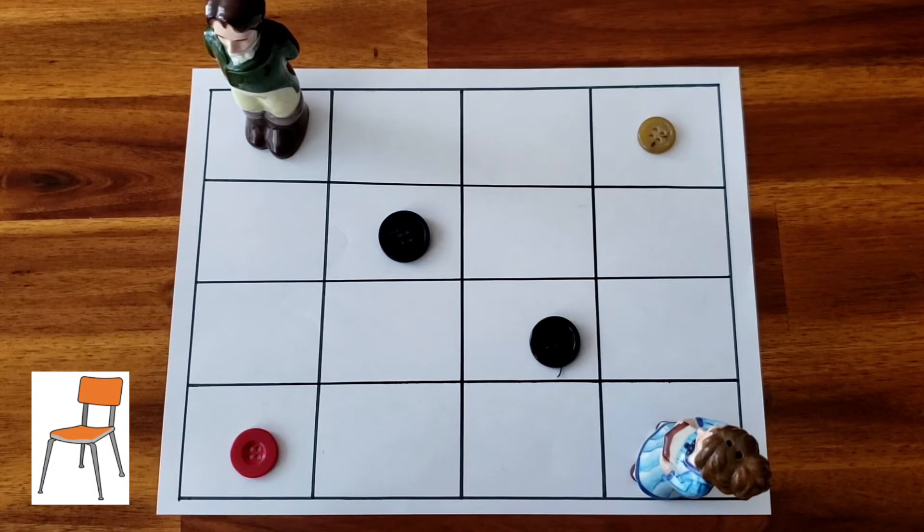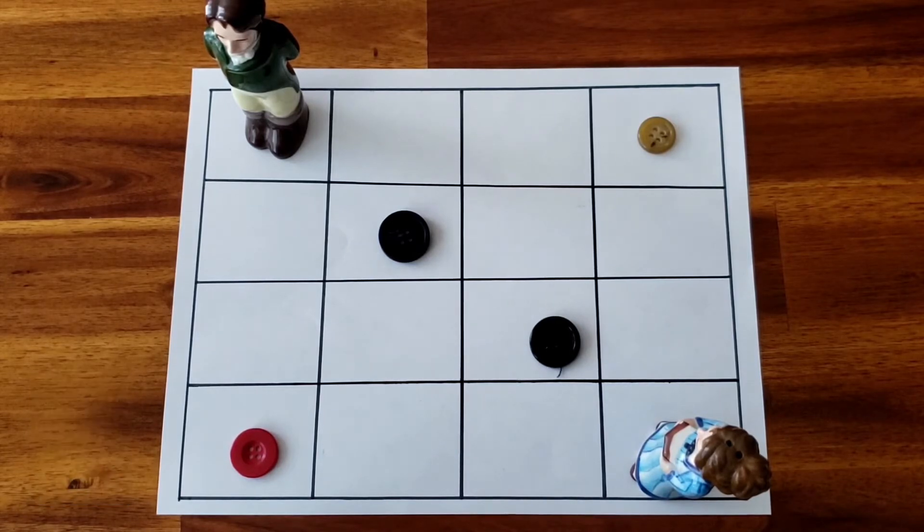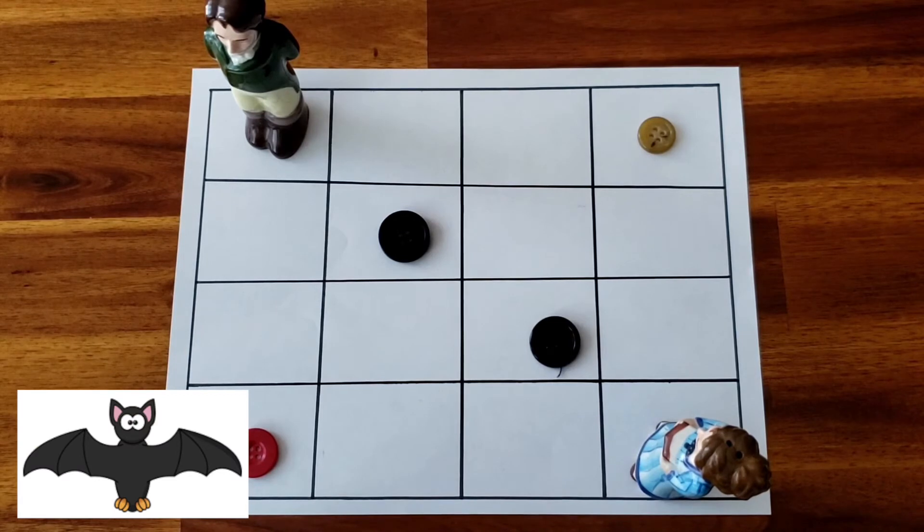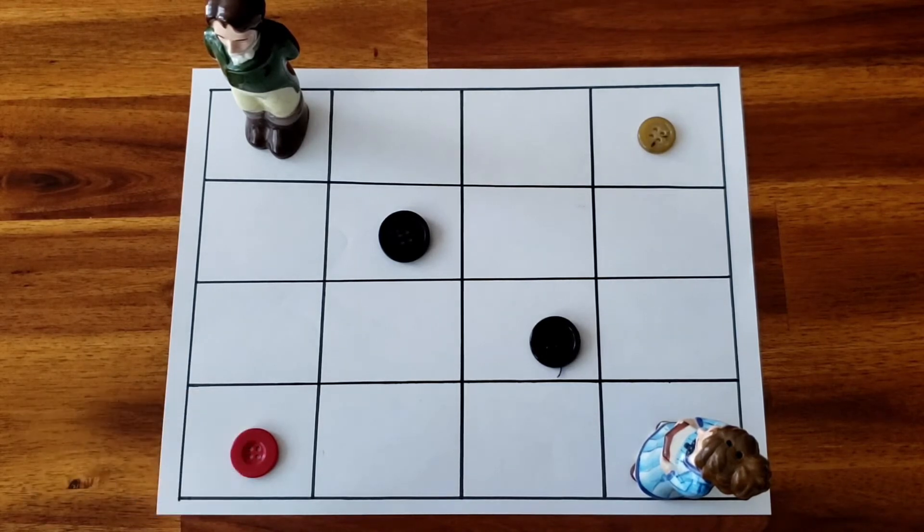For older kids or kids who understand a little bit more, what they're going to do is create an entire chain of commands with the arrow cards and then move their piece according to the arrows and see if they end up where they think they will.